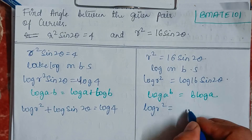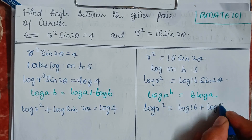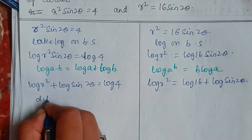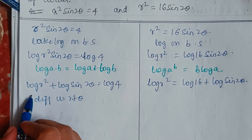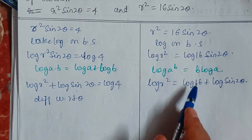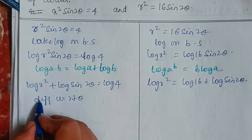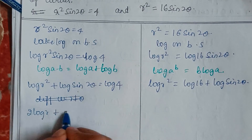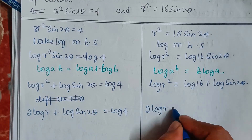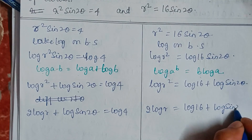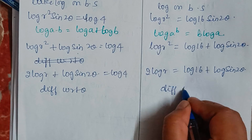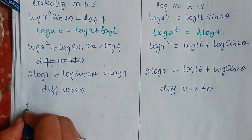Using these two formulas we expand both equations. The first becomes 2 log r + log sin(2θ) = log 4, and the second becomes 2 log r = log 16 + log sin(2θ). Now we will differentiate with respect to theta.